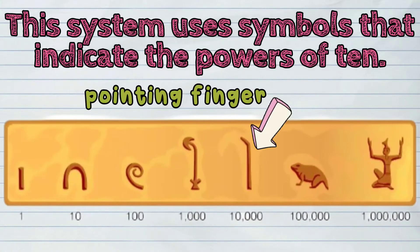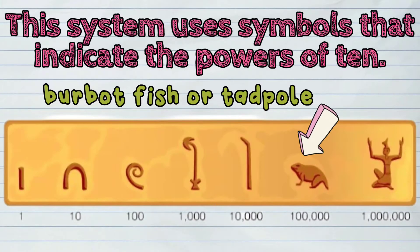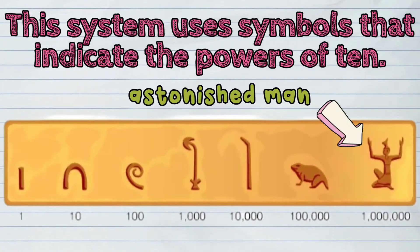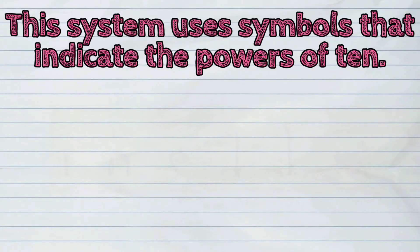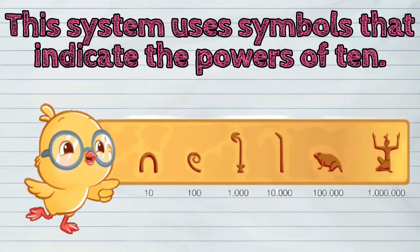A pointing finger for 10,000, a burbot fish or tadpole to represent 100,000, and an astonished man for 1,000,000. Let us find out how these symbols were used to represent a number.